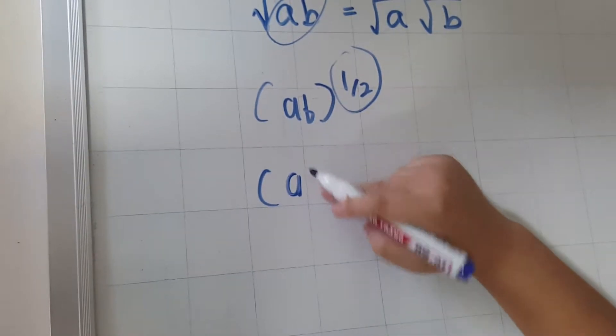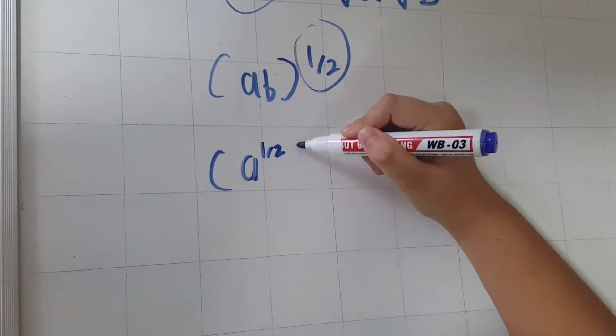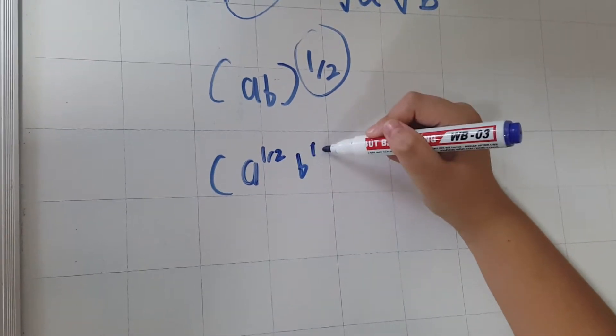So in your next part you take A to the power of a half and B to the power of a half.